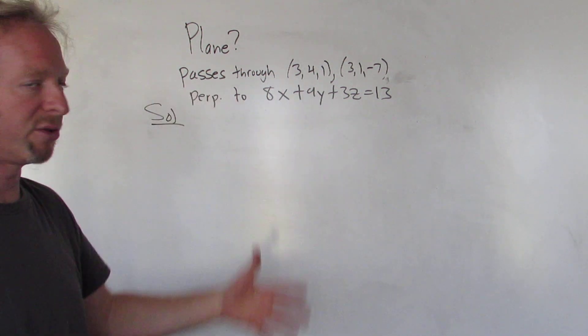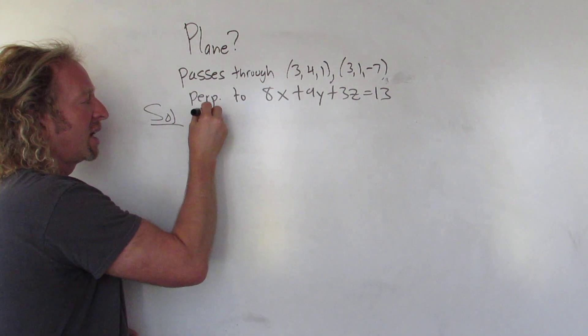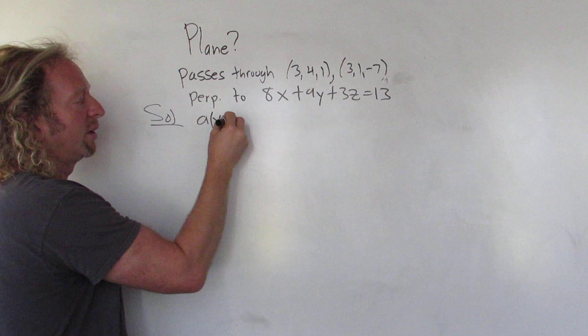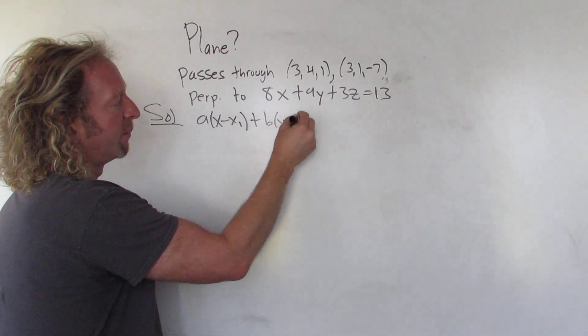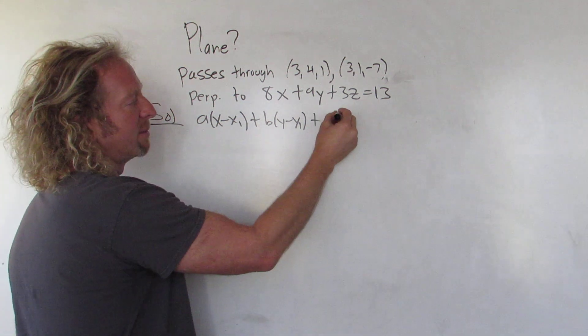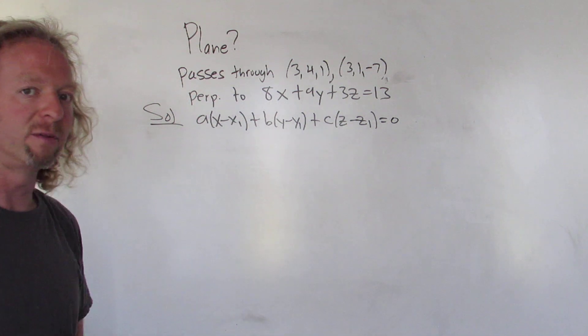So before we start working through it and thinking about it, let me just go ahead and write down the equation of the plane. So the equation of a plane is a times x minus x1 plus b times y minus y1 plus c times z minus z1, that's all equal to zero. So that's the equation of a plane.